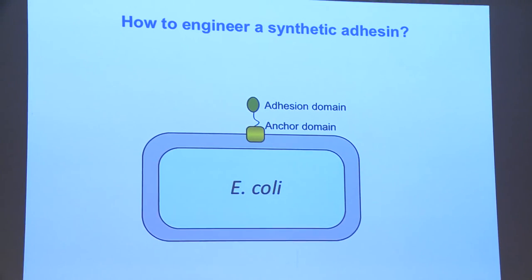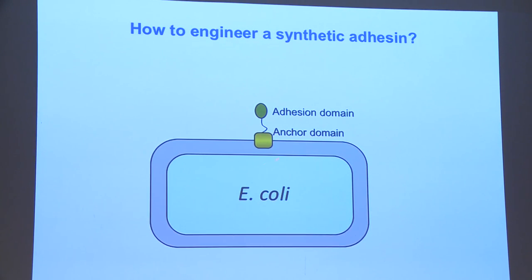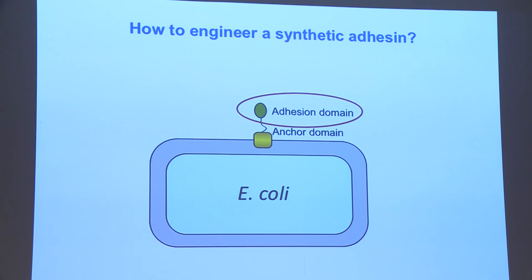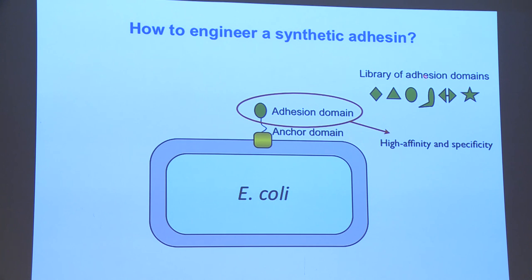We decided to reduce this to two modular parts: one domain carrying the adhesion property and a second domain anchoring it to the bacterial surface. The ideal properties would be high affinity and specificity, and importantly, it should be something selectable from a library — so that by simply changing the adhesion module you can target different surfaces.